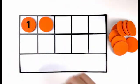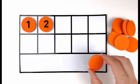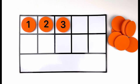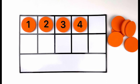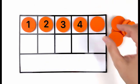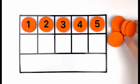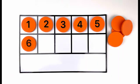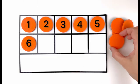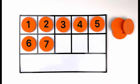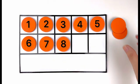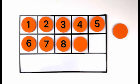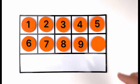One, two, three, four, five, six, seven, eight, nine, ten. Ten orange circles.